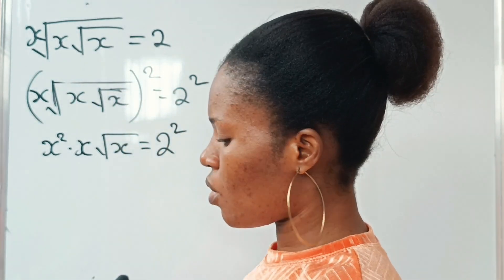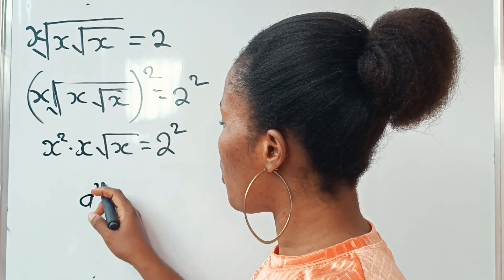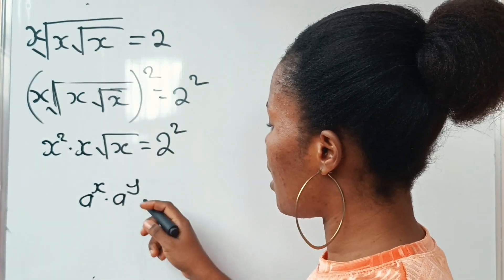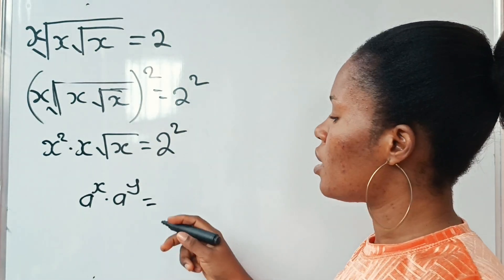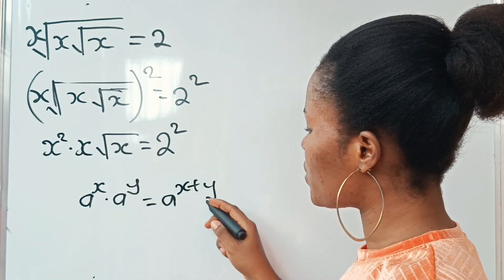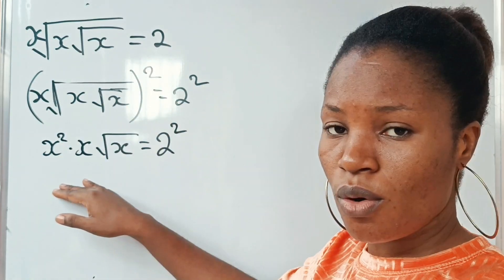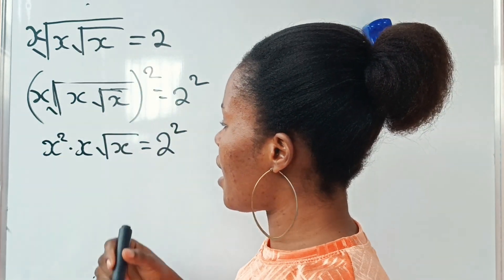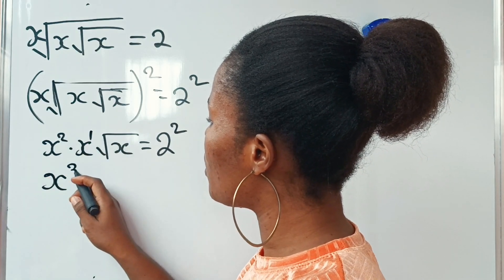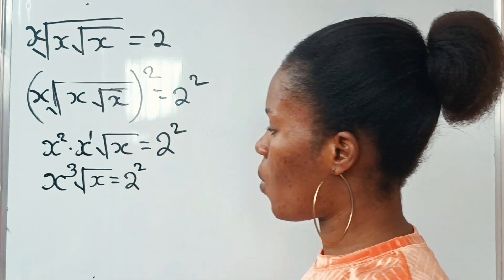Now we continue. According to the law of indices or exponents, when you have a to the power of x multiplied by a to the power of y, once you have the same base and they are multiplying each other, you pick one base and add the powers — that is x plus y. So applying that law here: x is the same thing as x to the power of 1, so we have x to the power of 2 plus 1, which is 3, then root x is equal to 2 squared.